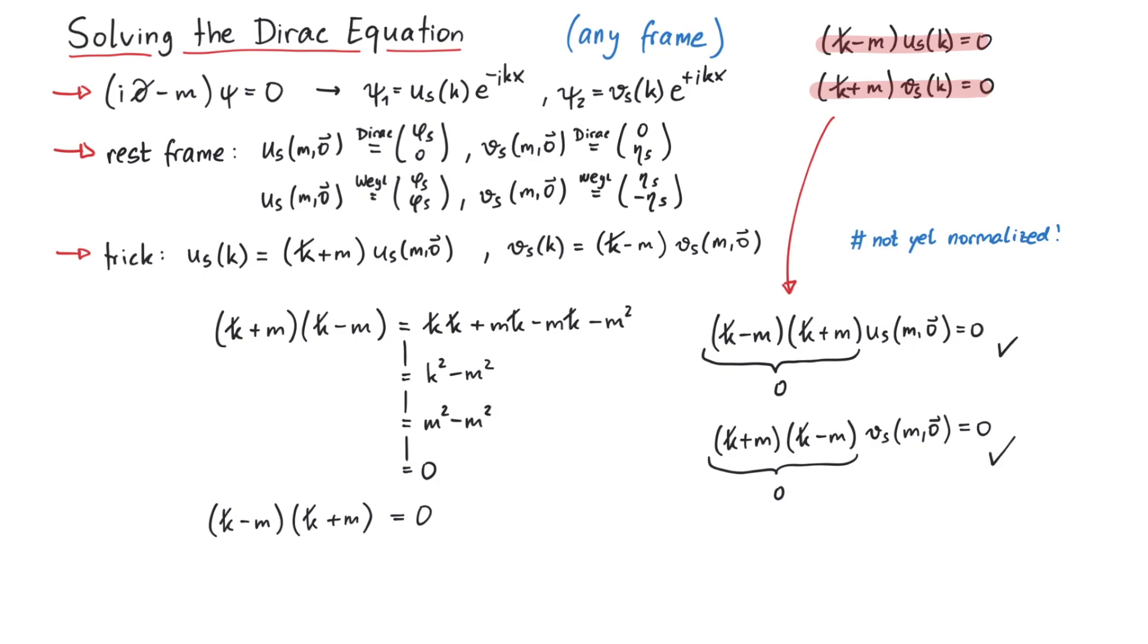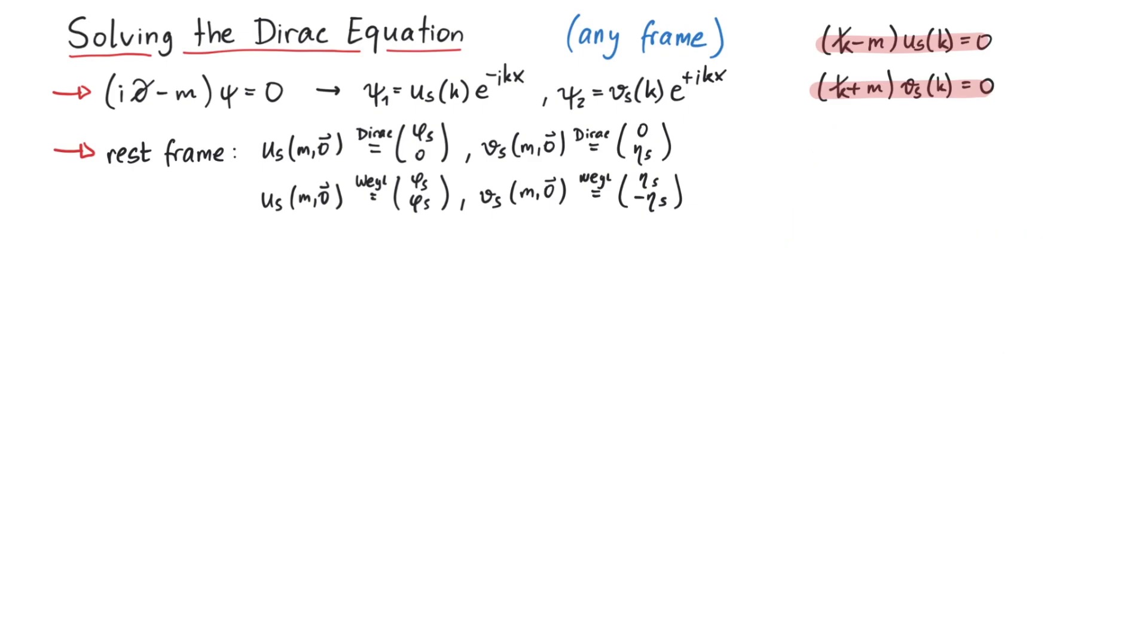Let's now do the calculation. To do so, we must choose a representation of the gamma matrices, since here inside k slash we have gamma matrices. First, we use the Dirac representation. Here, gamma zero is diagonal, gamma one, two, three are given in terms of the Pauli matrices, and the rest frame bispinners look like this.